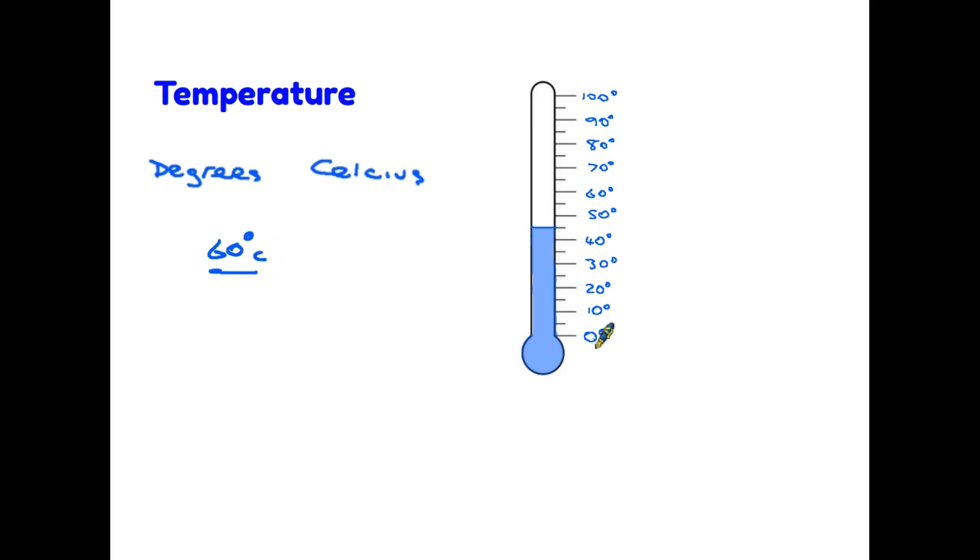Now looking at this scale, it goes from 0 to 100. So each of the big lines here are 10 degrees, 10, 20, 30, 40, 50. Now this scale is a little bit different because it only has one small line halfway between each of the larger ones. Therefore, each of the smaller lines must be 5 degrees.